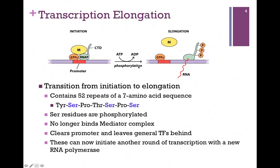As the serine residues are phosphorylated, RNA polymerase can no longer bind the mediator complex. RNA polymerase dissociates from both the general transcription factors and mediator. It proceeds to read the DNA template and extend the RNA strand, pictured here in red. Mediator dissociates, leaving the general transcription factors still occupying the promoter region. These can now initiate another round of transcription with a new RNA polymerase and a new mediator bound.